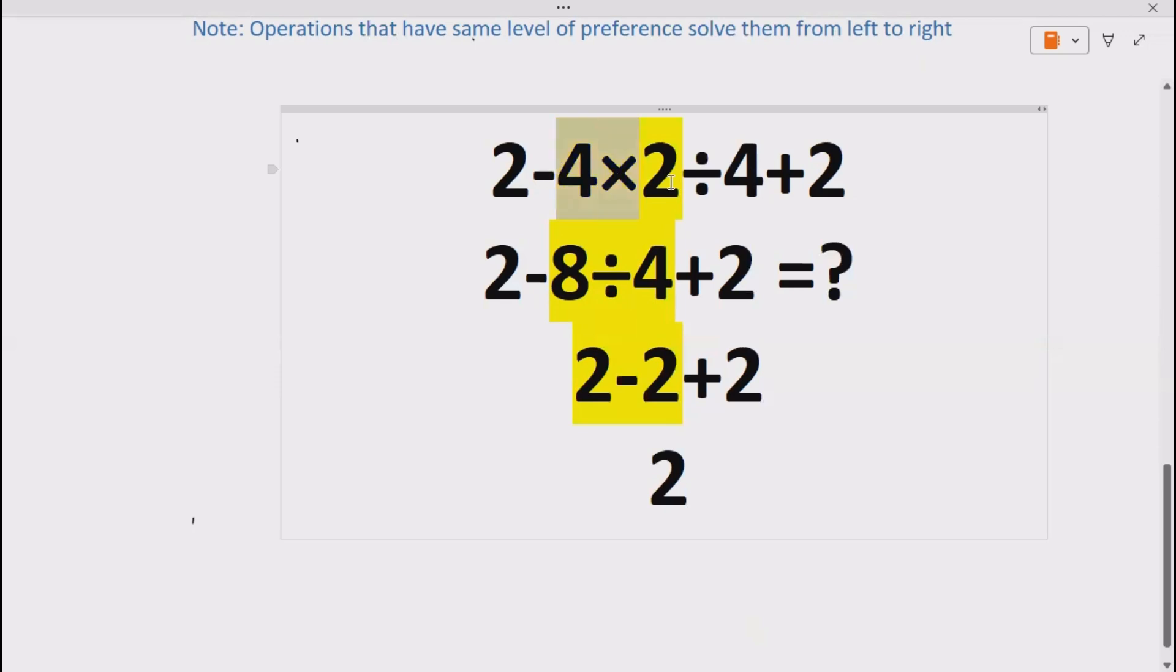Now 4×2 gives us 8, so we have 2-8÷4+2, and 2 minus remains as it is. Now we have to do division, so 8÷4 gives us 2, so we have 2-2+2.